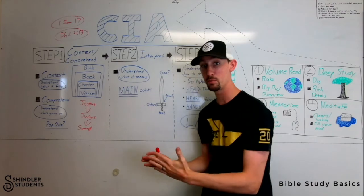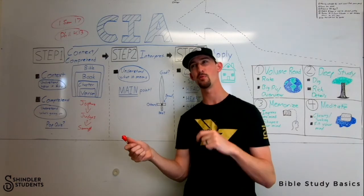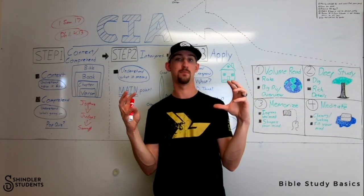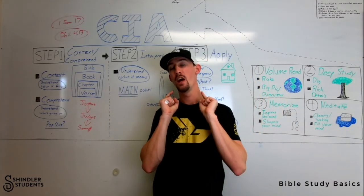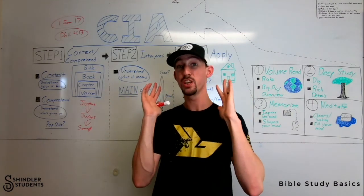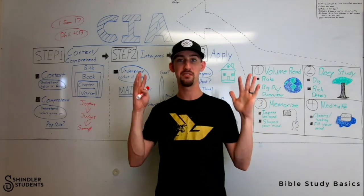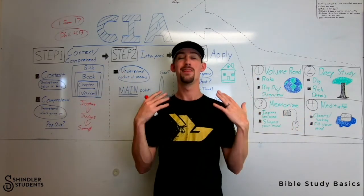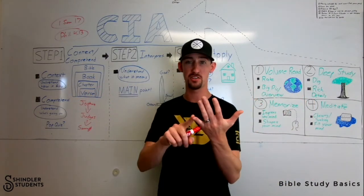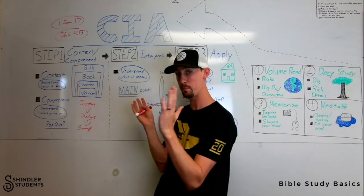Now specifically with the book of Samuel — you might be a little weirded out when I say 'the book of Samuel' because there's 1 Samuel and 2 Samuel. Here's a fun fact: when it was originally written, it was one book. The reason why it's 1 and 2 Samuel in our Bibles is because when they originally wrote it, the scrolls were not long enough to fit the whole thing on one scroll, so they split it into two scrolls. Same thing with 1 and 2 Kings and 1 and 2 Chronicles — they're actually one book.